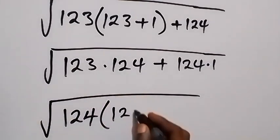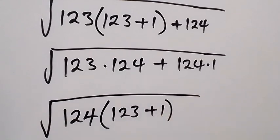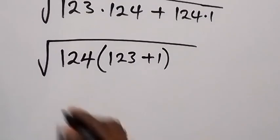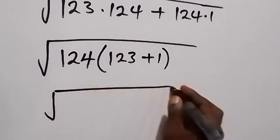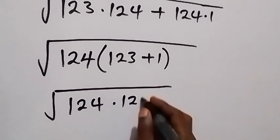And here we mean 123, then plus 1. And then from here, we have 123 plus 1 as 124. So this becomes square root of 124 times 124.